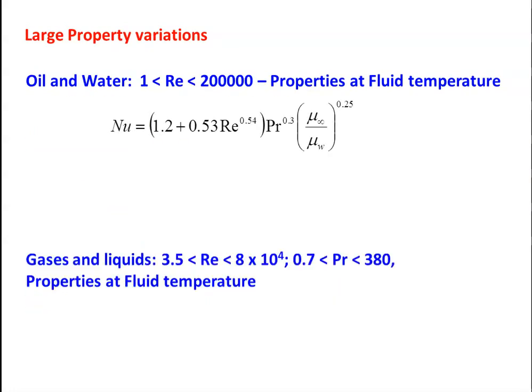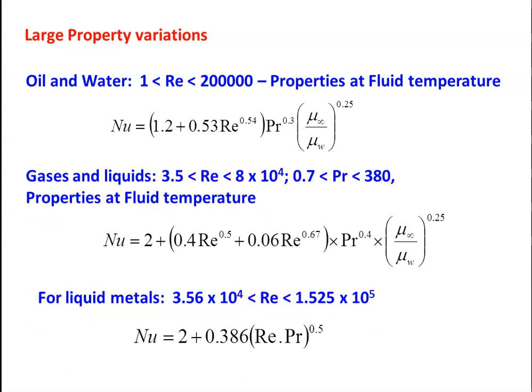For large property variation, select the appropriate Nusselt number equation. For oil and water, calculate properties at fluid temperature. For gas, liquid, or liquid metal with varying properties, select the corresponding equation. The selection of Nusselt's equation depends on major conditions: laminar or turbulent flow, constant wall temperature or constant heat flux, and the type of fluid — air, water, or liquid metal. Pick the appropriate equation, substitute numerical values, and solve.